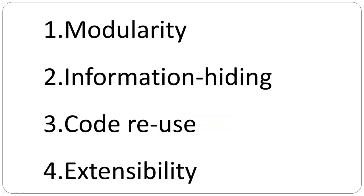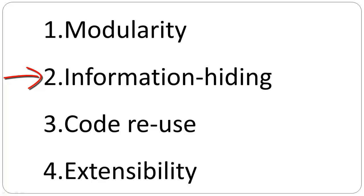Advantages of object-oriented programs are that they are modular — it is easier to change one module without affecting the other. Information is hidden from other objects, and it is easier to change the internal state without affecting the external interface.